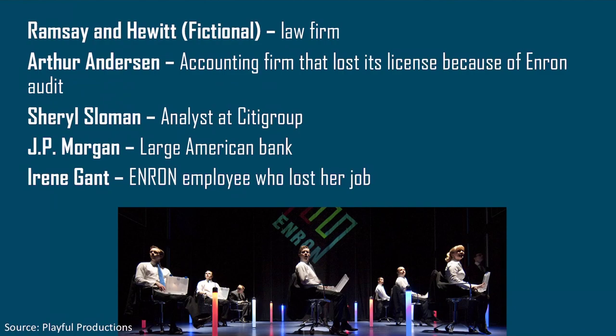Ramsey and Hewitt are other fictional characters — or rather fictional firms — created as part of the play; they are a law firm. Arthur Anderson was a real accounting firm that lost its licence because of the Enron audit. We also meet Cheryl Sloman, an analyst at City Group, and JP Morgan, a large American bank heavily invested in the company. Irene Grant is another Enron employee who lost her job.